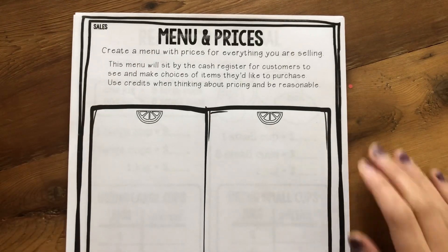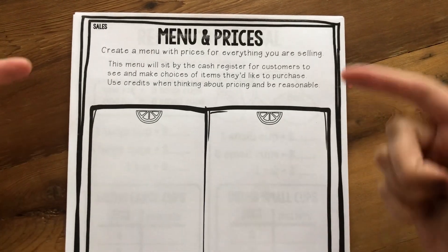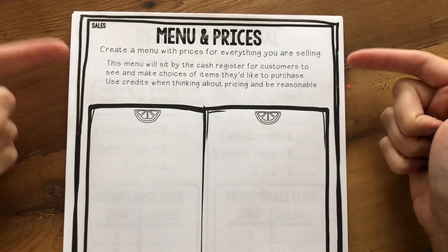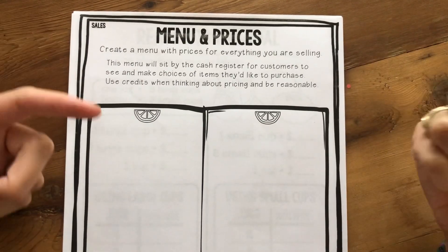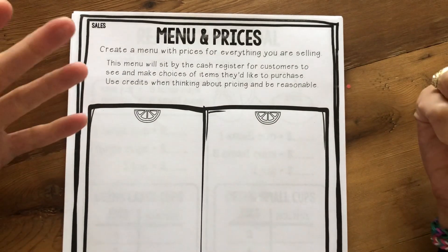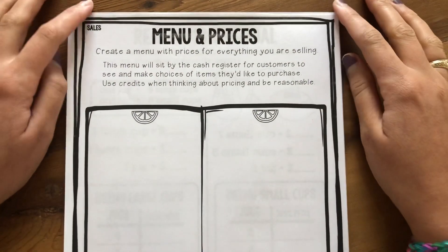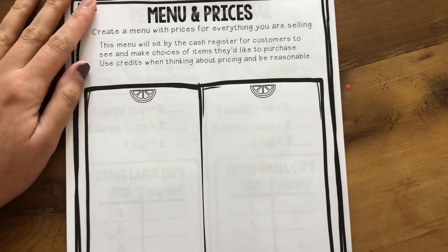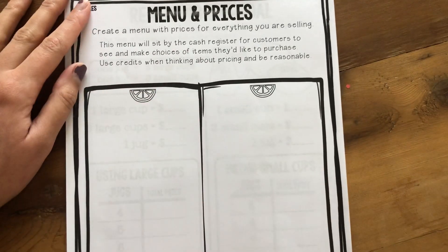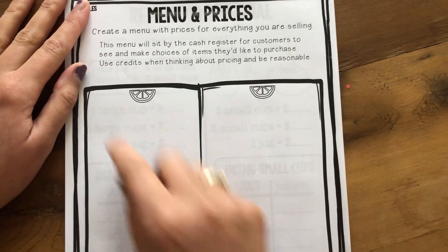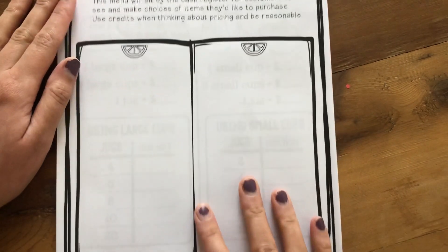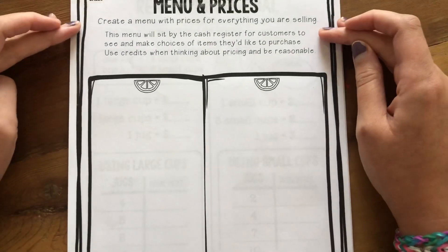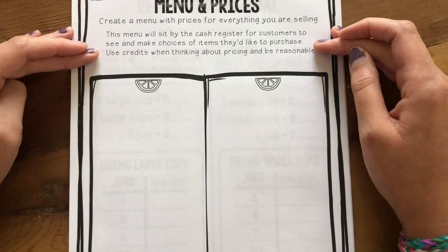The first thing we're going to do is create a menu. This is where you're going to have the prices for everything that you're selling — your lemonade, your snacks, all of that stuff you're going to sell. On this side you could do your item, and the price on the other side — items and prices. It's totally up to you how you organize this. This will sit by the cash register for your customers to see and make choices they'd like to purchase.